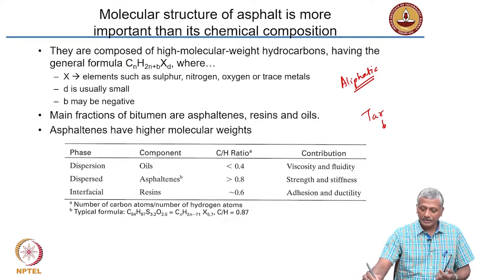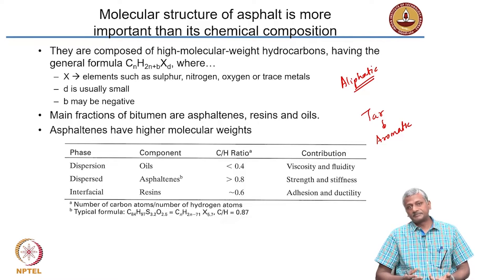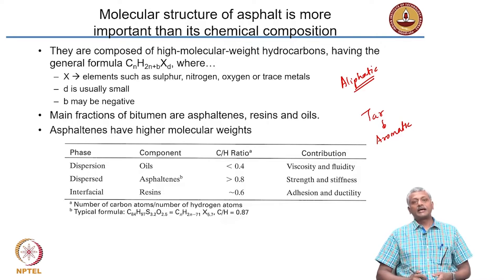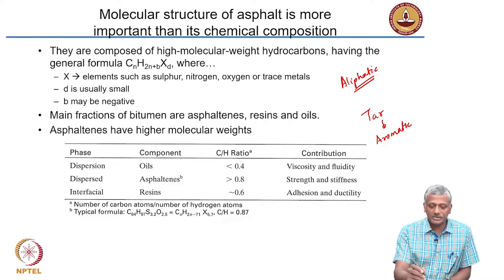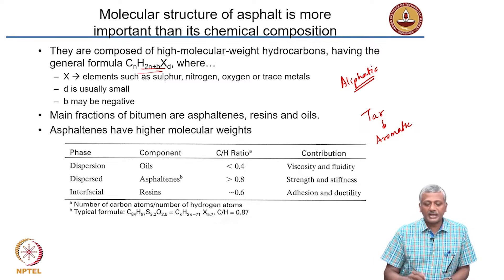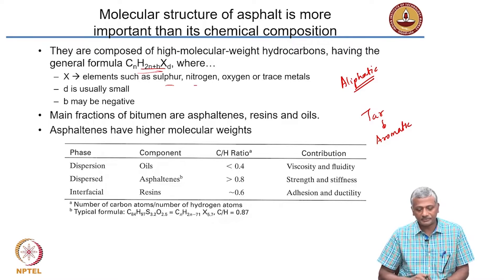Tar is aromatic. If you remember your organic chemistry, aromatic means it has got the benzene rings in it, whereas asphalt has a long chain structure. This is a general formula of asphalt. You can have elements like sulfur, nitrogen, oxygen, or trace metals in the structure of the hydrocarbon itself.